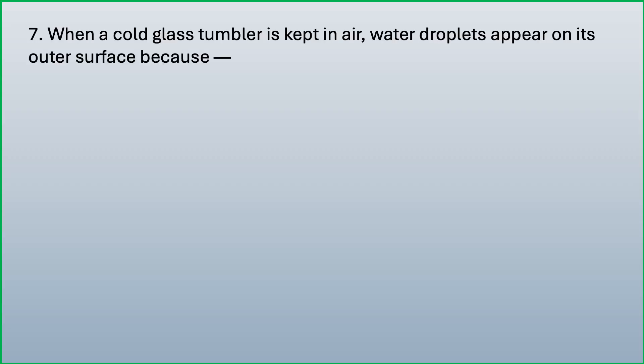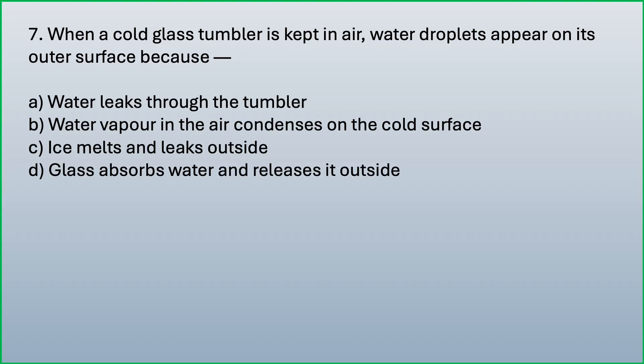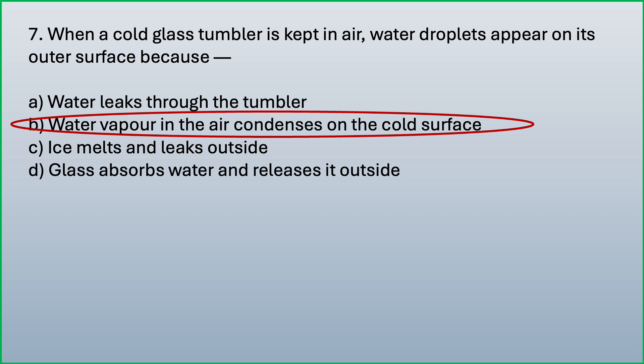When a cold glass tumbler is kept in air, water droplets appear on its outer surface because: water leaks through the tumbler; water vapour in the air condenses on the cold surface; ice melts and leaks outside; glass absorbs water and releases it outside. Which is the correct answer? Water vapour in the air condenses on the cold surface — water vapour from the air comes in contact with the cold surface of the glass tumbler and gets converted into water droplets through condensation.